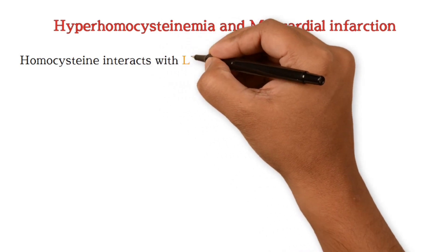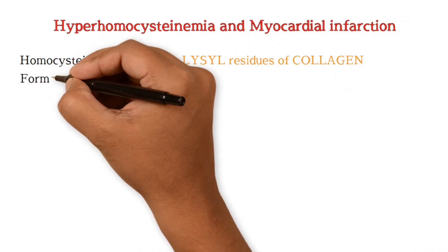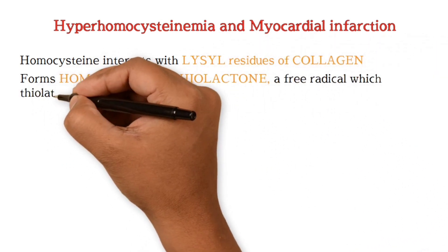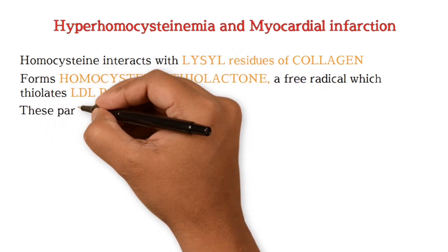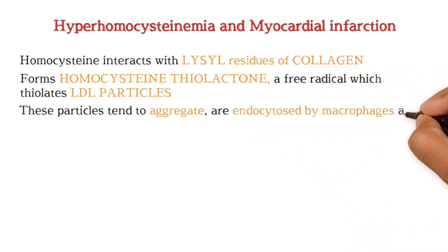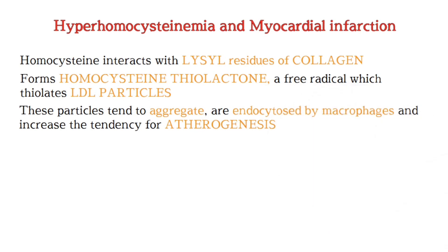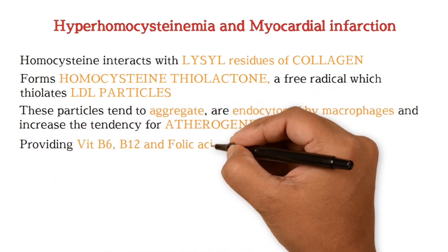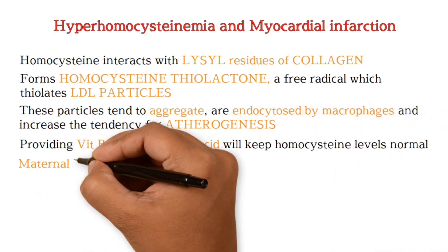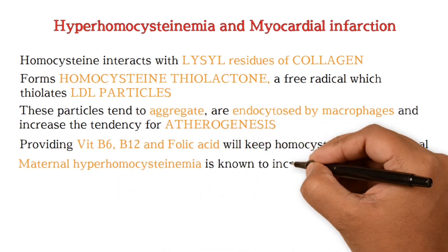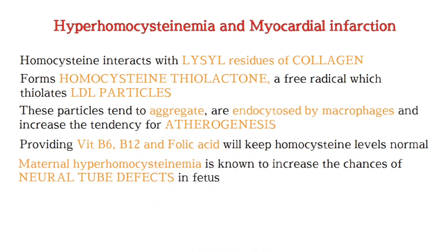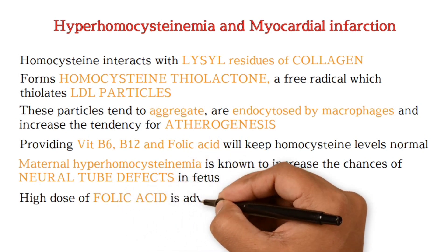Regarding hyperhomocysteinemia and myocardial infarction: homocysteine interacts with lysyl residues of collagen to form homocysteine thiolactone, a free radical that thiolates LDL particles. These particles tend to aggregate, are endocytosed by macrophages, and increase the tendency for atherogenesis. Providing vitamin B6, B12, and folic acid will keep homocysteine levels normal. Maternal hyperhomocysteinemia is known to increase the chances of neural tube defects in the fetus, so high-dose folic acid is advised in pregnancy.